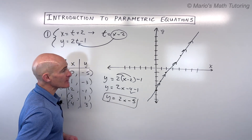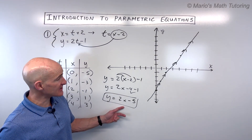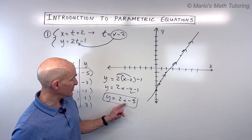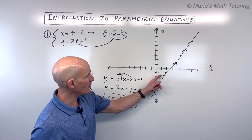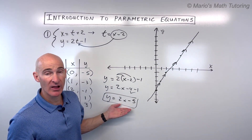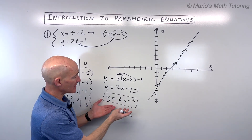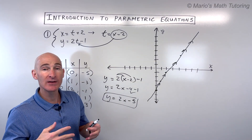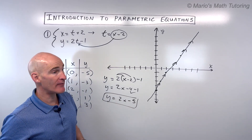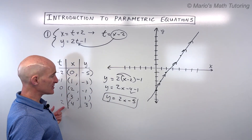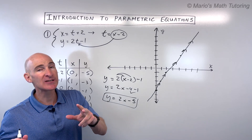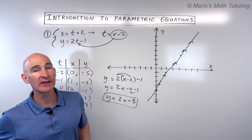That makes a lot of sense because the y-intercept is negative five and the slope is two — so you rise two, run one. This is the equation of a line. The only thing we're missing when it's in rectangular form is the orientation or the direction that this object is traveling with increasing values of t or time. This was a simple example. Let's look at some other ones you're likely to encounter.